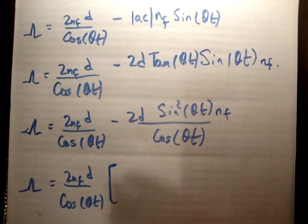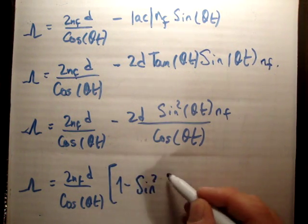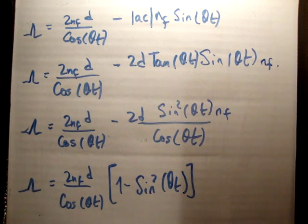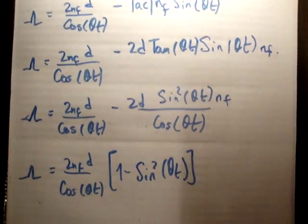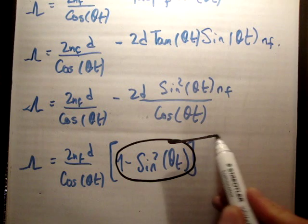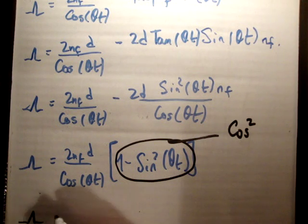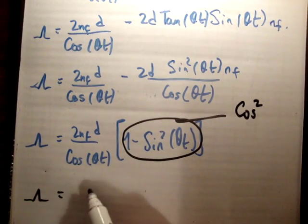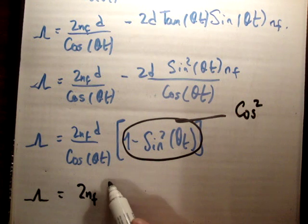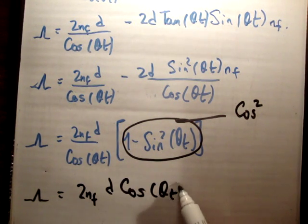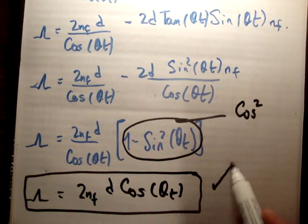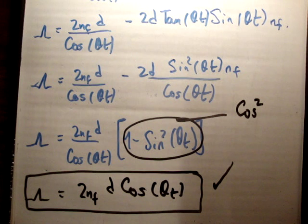And we're left with, as a result, 1 minus sine squared theta t. You might say, where did you get that? Well, cos squared equals 1 minus sine squared. So that's pretty straightforward stuff. And as a result, this becomes cos squared. And cos squared divided by cos gives a final answer: the optical path difference becomes 2 times N sub f d cos theta t. Boom. And that gives you the optical path difference for thin film interference.